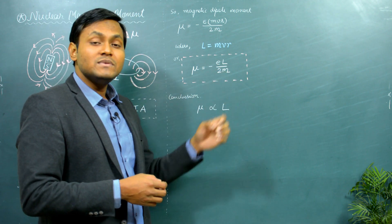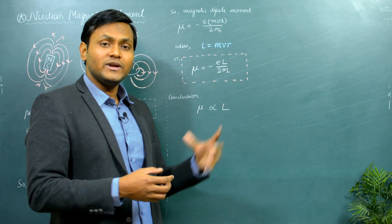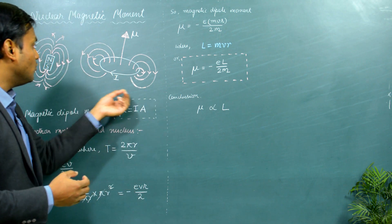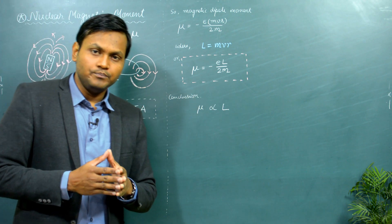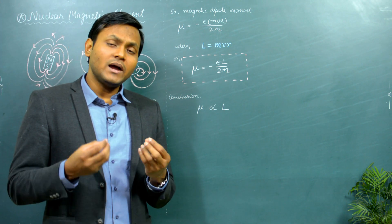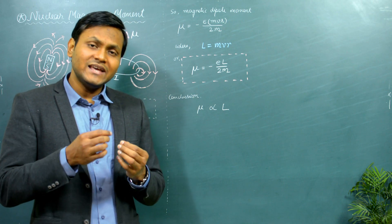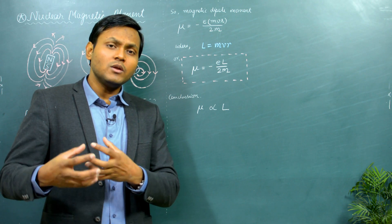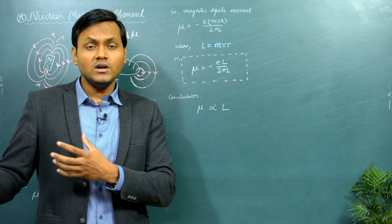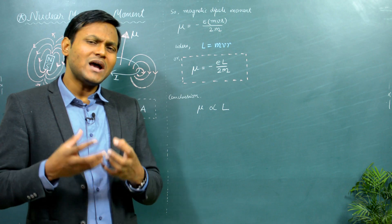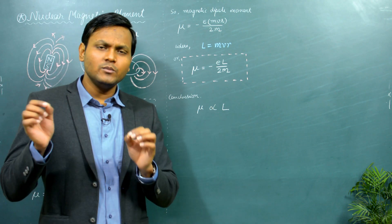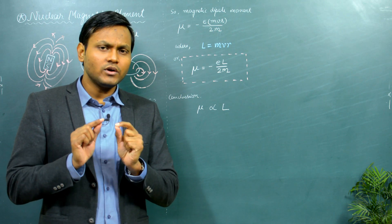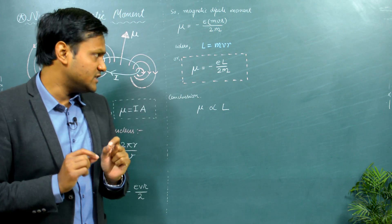E is the electronic charge, m is the mass of the electron, L is the orbital angular momentum, and μ is the magnetic moment associated with the orbital motion of the electron. This expression is obtained by looking at the classical picture of the electron revolving around the nucleus. The quantum mechanical expression has a similar kind of expression with a little bit of a correction involved. However, before we go there, let's first look at a very important conclusion we can derive from this expression.